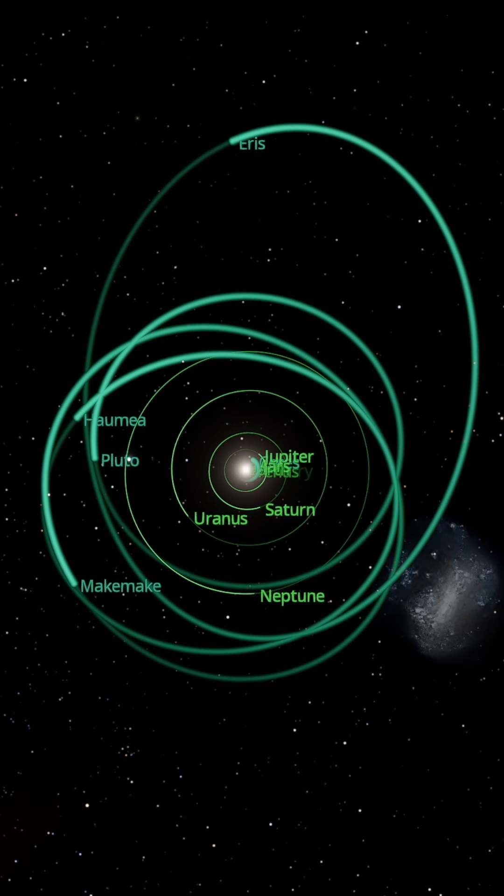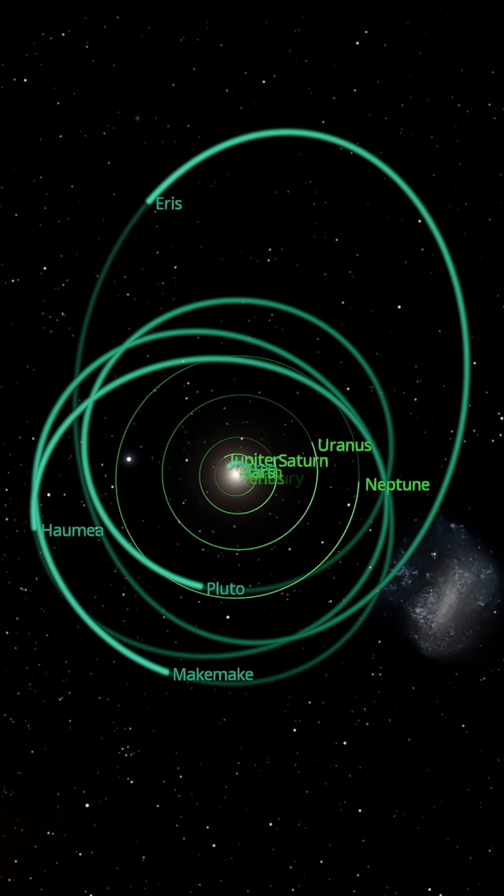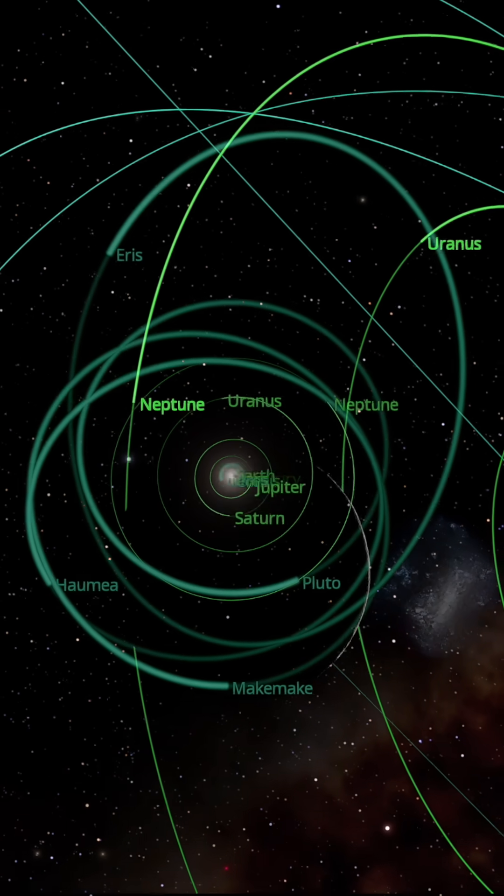The solar system might seem like a well-organized piece of clockwork with planets neatly orbiting the sun on a flat plane, but beyond Neptune that order starts to unravel.